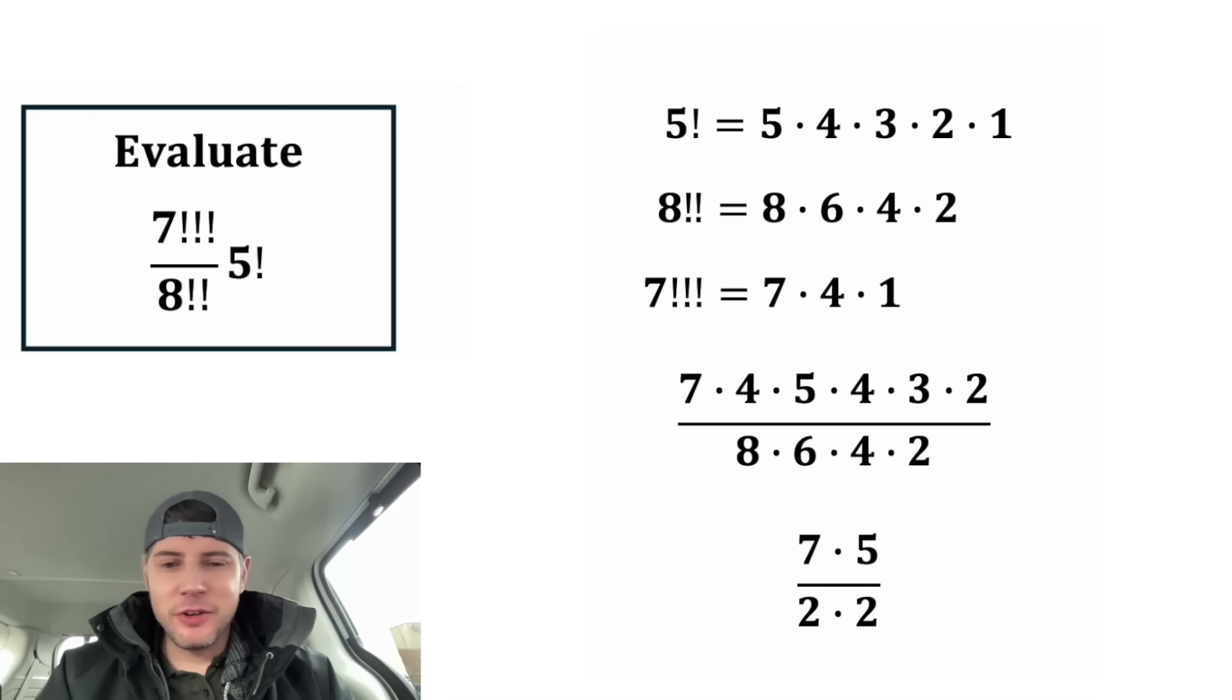So we have 7 times 5 over 2 times 2. Well, that's going to be 35 over 4. And this is the answer to our question. All of this simplifies to this. Let's put a box around it.